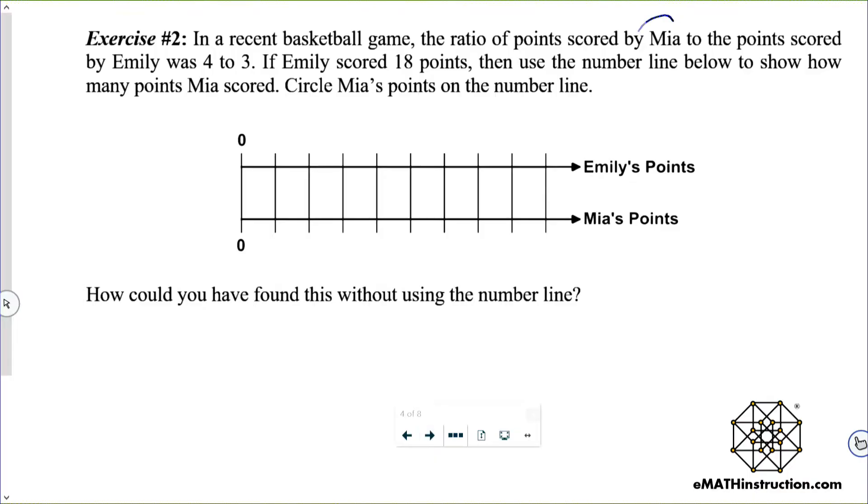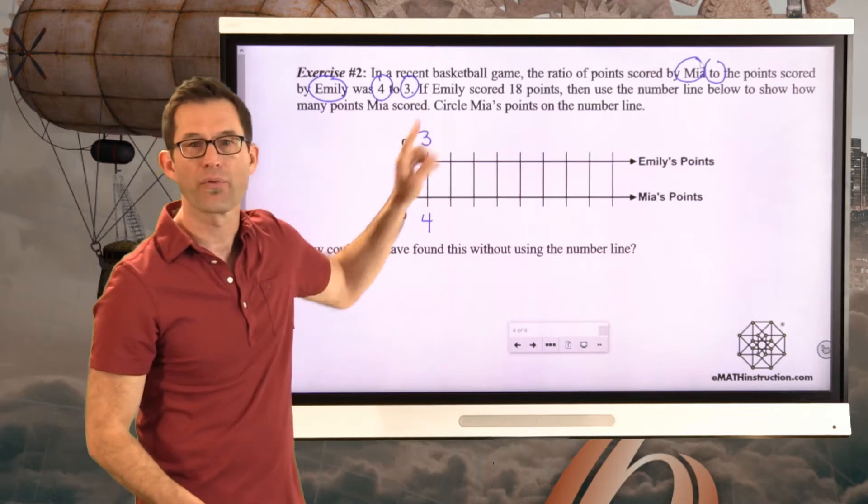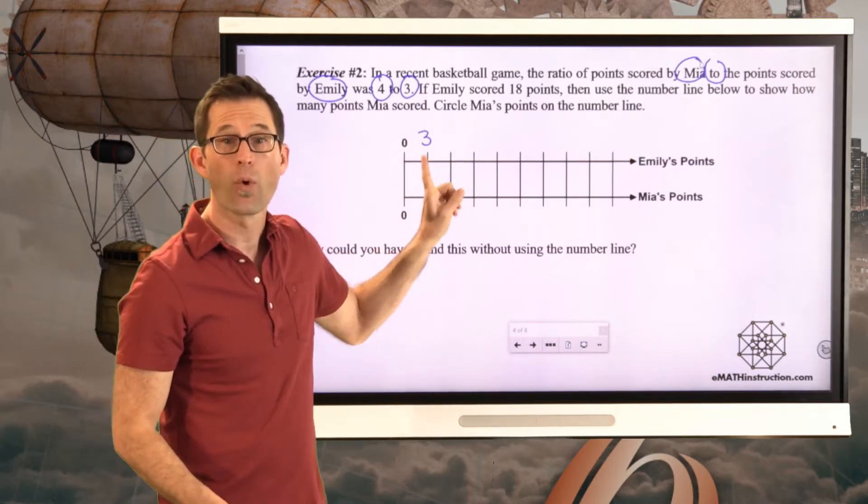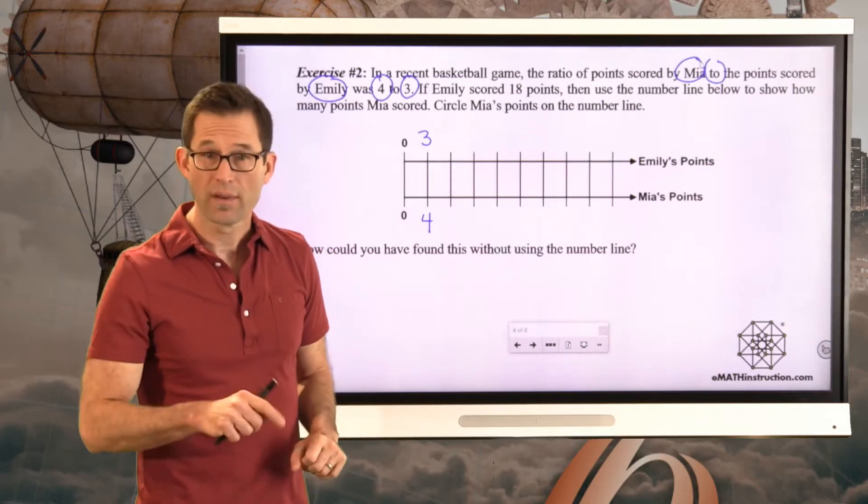Now you have to be a little bit careful here. The points scored by Mia to the points scored by Emily was 4 to 3. So Mia has 4 points. Emily has 3 points. It could be very easy because the number 4 comes first and the number 3 comes second to put the 4 here and the 3 here. That's not the case.